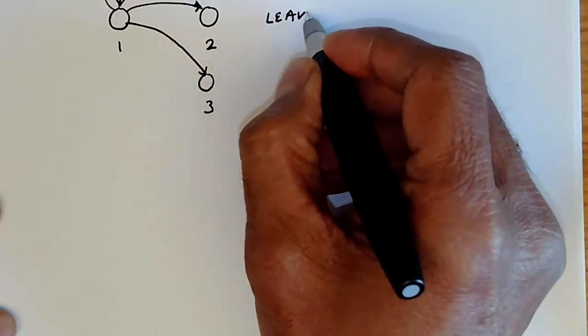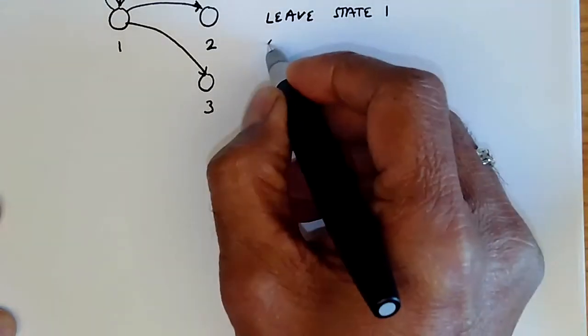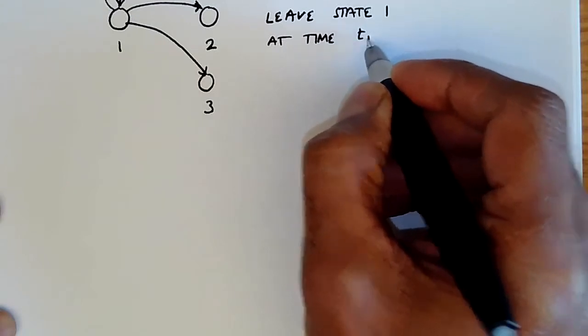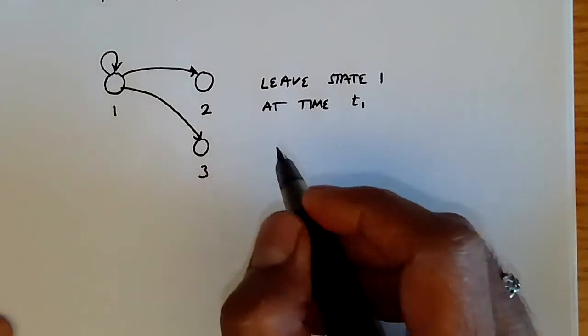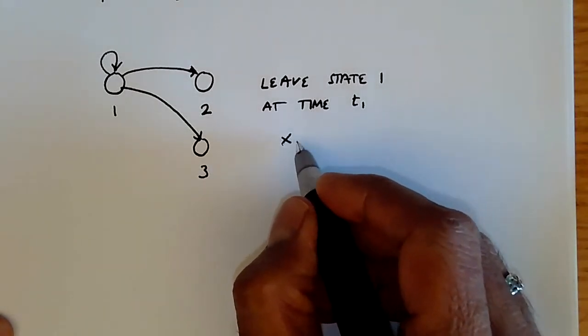So we leave state one at time T1. What we say is that we have some distribution of the random variable X_{T1}.